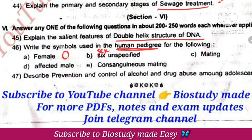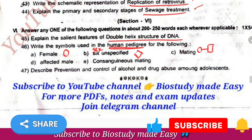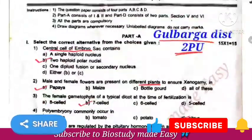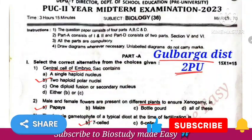In pedigree analysis: a diamond or unspecified symbol represents sex unspecified; mating is shown by a line between male and female; consanguineous mating means marriage between relatives shown by varied lines; affected male is also indicated. Prevention and control of alcohol and drug abuse — these were all the questions given in the Gulbarga district second PUC midterm examination.